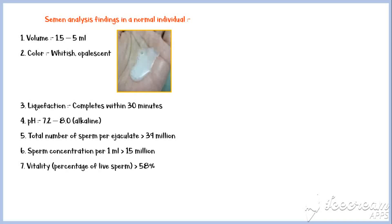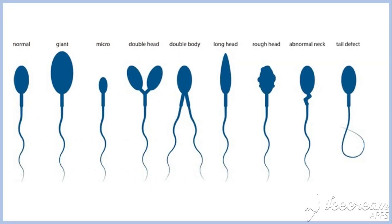Sperm vitality, or the percentage of live sperms, should be more than 58%, and the percentage of morphologically normal spermatozoa should be more than 4%. In this image, you can see a morphologically normal sperm cell in the leftmost side. All the others are abnormally shaped spermatozoa.